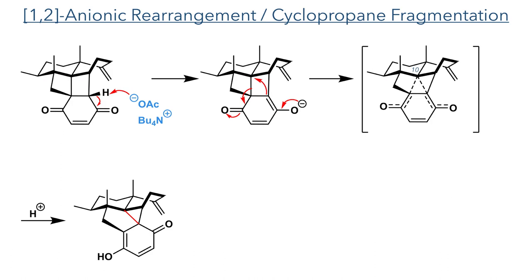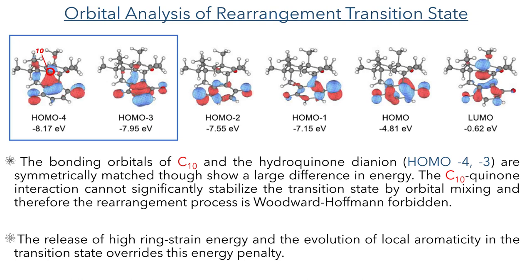With the cycloaddition complete, they could then carry out a 1,2-anionic rearrangement cyclopropane fragmentation sequence. Reacting the compound with tetrabutylammonium acetate first deprotonates the alpha position, forming an enolate that undergoes rearrangement to form a cyclopropane ring, together with cleavage of a carbon-carbon bond in the cyclobutane group, which forms an enol upon protonation. The authors propose a concerted mechanism; DFT studies showed that in the HOMO-4 and HOMO-3 orbitals, the bonding orbitals of carbon-10 and the hydroquinone dianion are symmetrically matched but show a large difference in energy. This suggests the interaction cannot significantly stabilise the transition state by orbital mixing and therefore the process is Woodward-Hoffmann forbidden. Though formally forbidden, this does not mean it cannot occur — in this molecule, release of high ring strain energy and evolution of local aromaticity in the transition state overrides this energy penalty, allowing the reaction to occur.